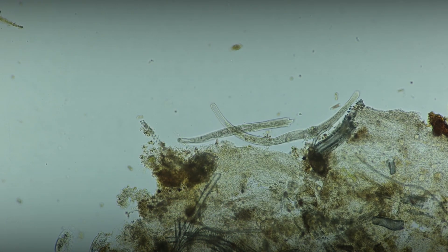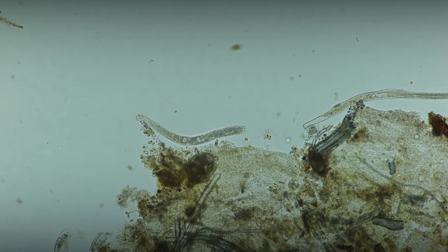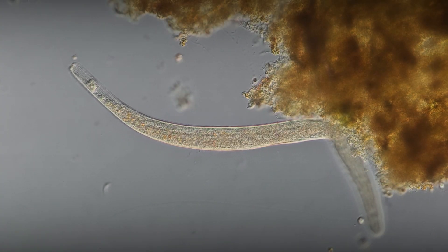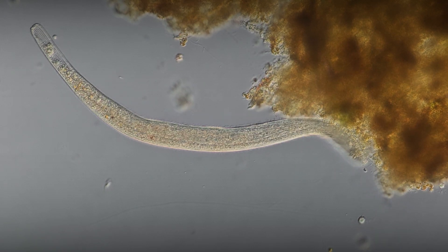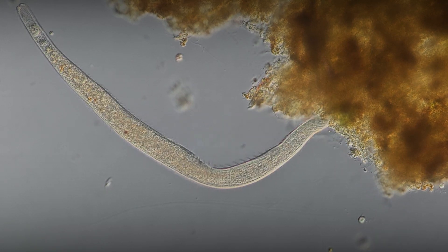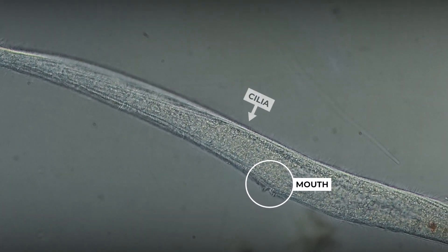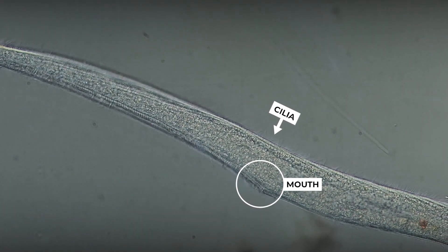However, such deposits often form oxygen-free zones where Spirostomums, surprisingly, can survive. Scientists suggest that this is possible thanks to symbiotic algae inside the cell that release oxygen during photosynthesis, as well as a series of biochemical processes that occur within the cell.